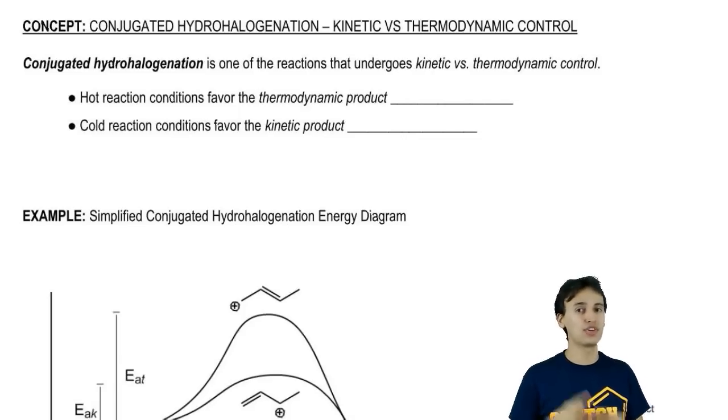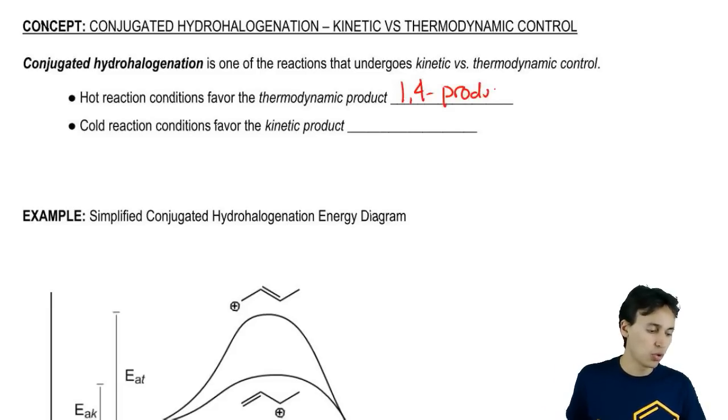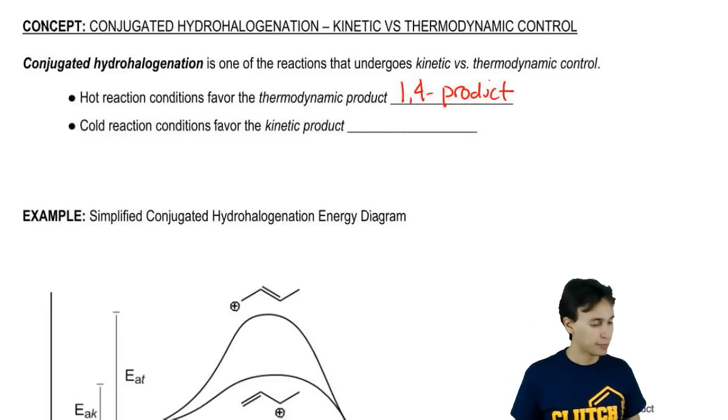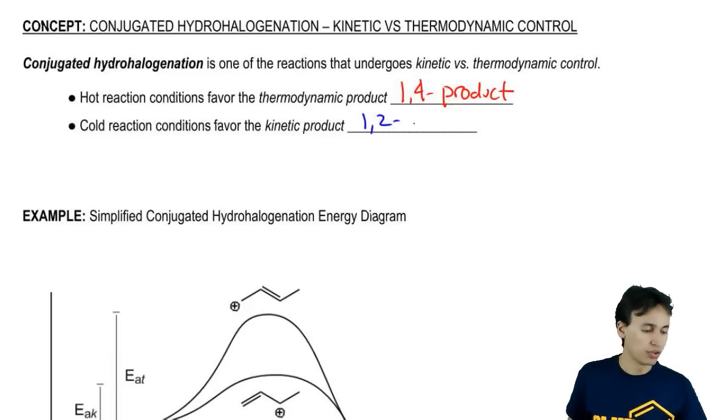It's not the only one, but it's a great reaction to use as an example to explain this concept. If you guys recall, with this reaction, hot reaction conditions favor the formation of the thermodynamic product which we called the 1,4 product due to the orientation of the hydrogen and the halogen. We learned that cold reaction conditions favored the kinetic product which we called the 1,2 product for the same reasons.